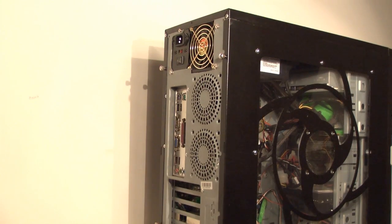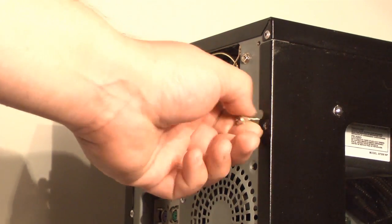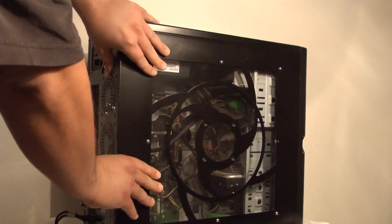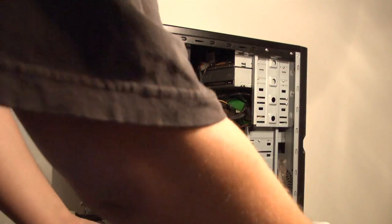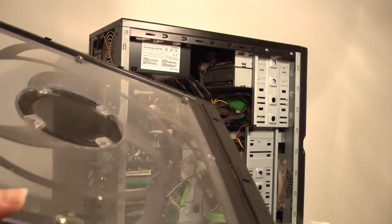Start off by unplugging your system. Next, remove the side of the case by removing the back screws, pushing forward, and popping off the side. Now that the side of the case is removed, you're ready to begin.